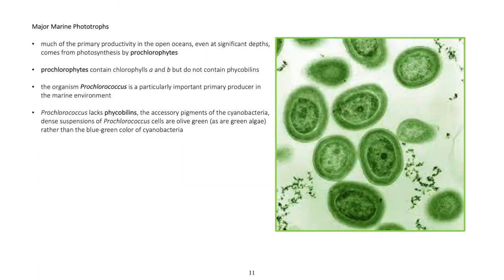Major marine phototrophs: Much of the primary productivity in the open oceans, even at significant depths, comes from photosynthesis by prochlorophytes. Prochlorophytes contain chlorophylls A and B but do not contain phycobilins. The organism Prochlorococcus is a particularly important primary producer in the marine environment. Prochlorococcus lacks phycobilins, the accessory pigments of cyanobacteria. Dense suspensions of Prochlorococcus cells are olive green, as are green algae, rather than the blue-green color of cyanobacteria.